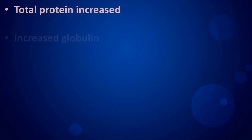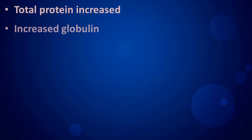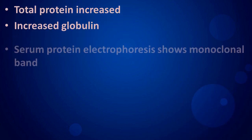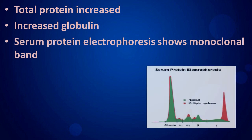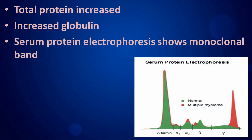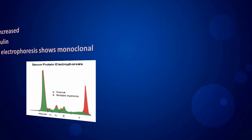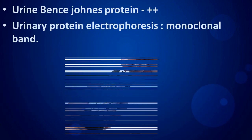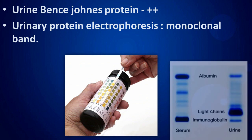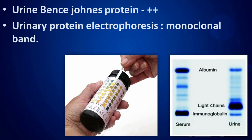Total protein is increased, and increased globulin is seen. Serum protein electrophoresis shows a monoclonal band. Urine Bence Jones protein is double positive, and urinary protein electrophoresis also shows a monoclonal band.